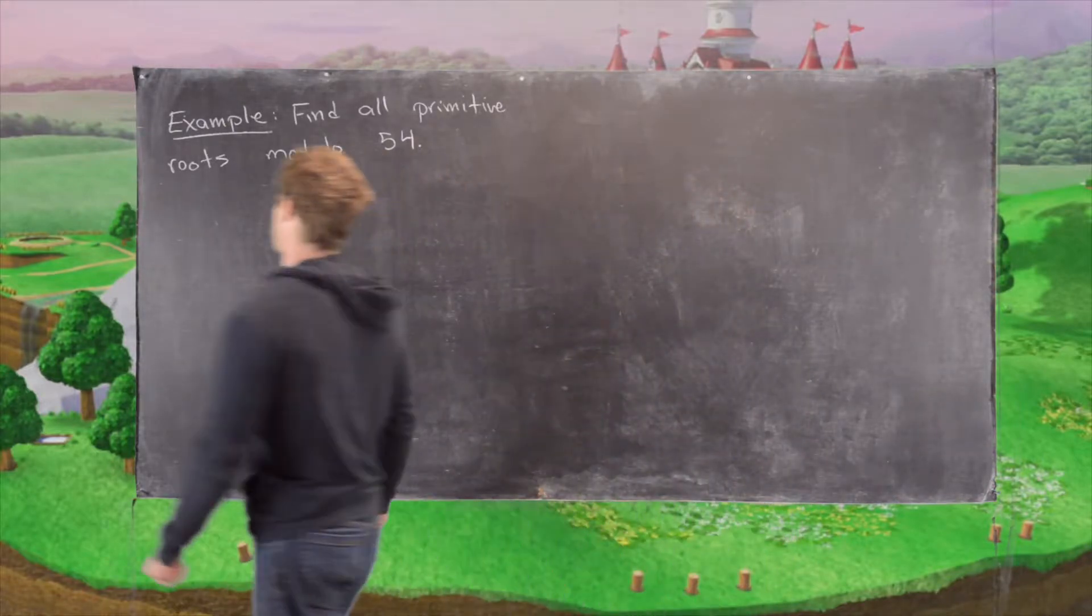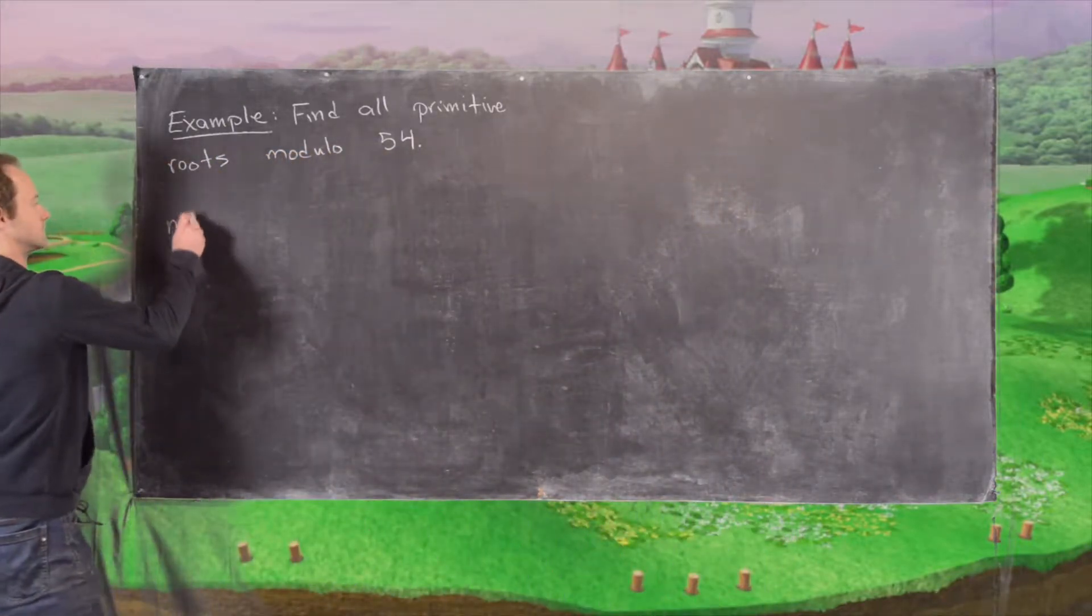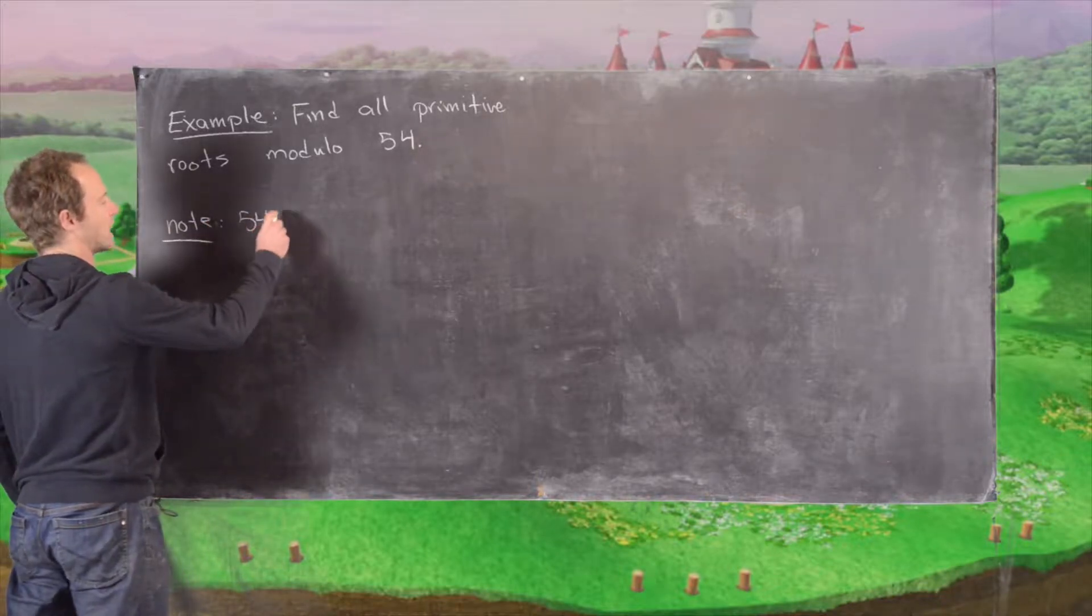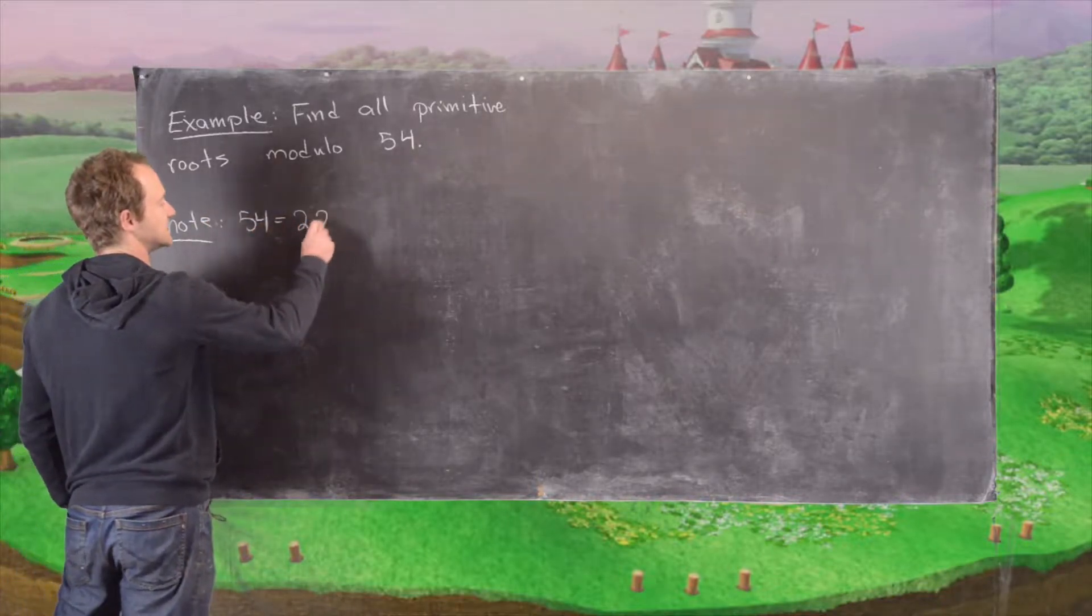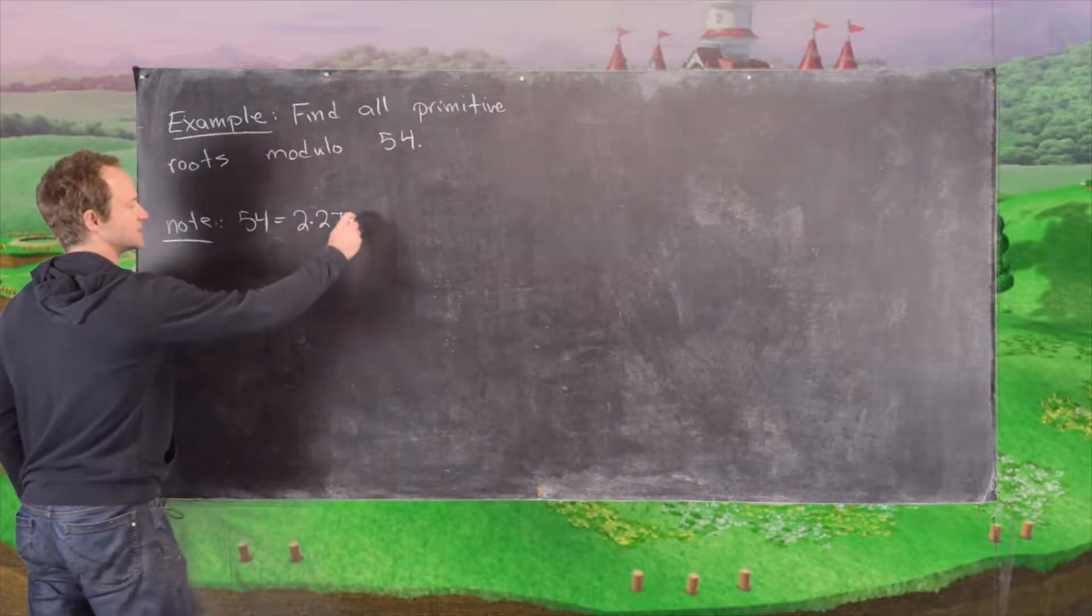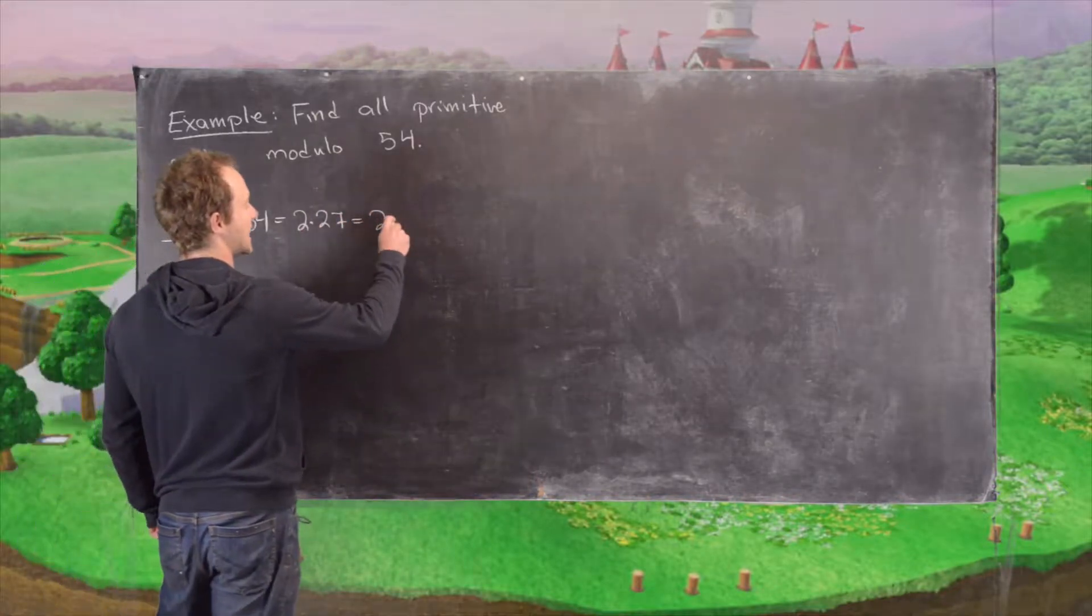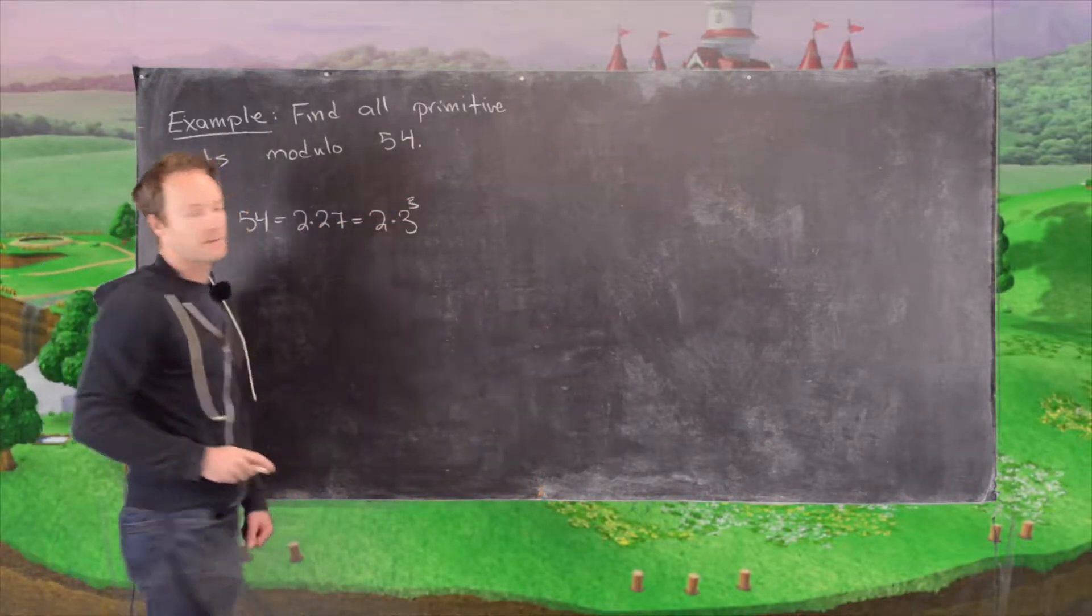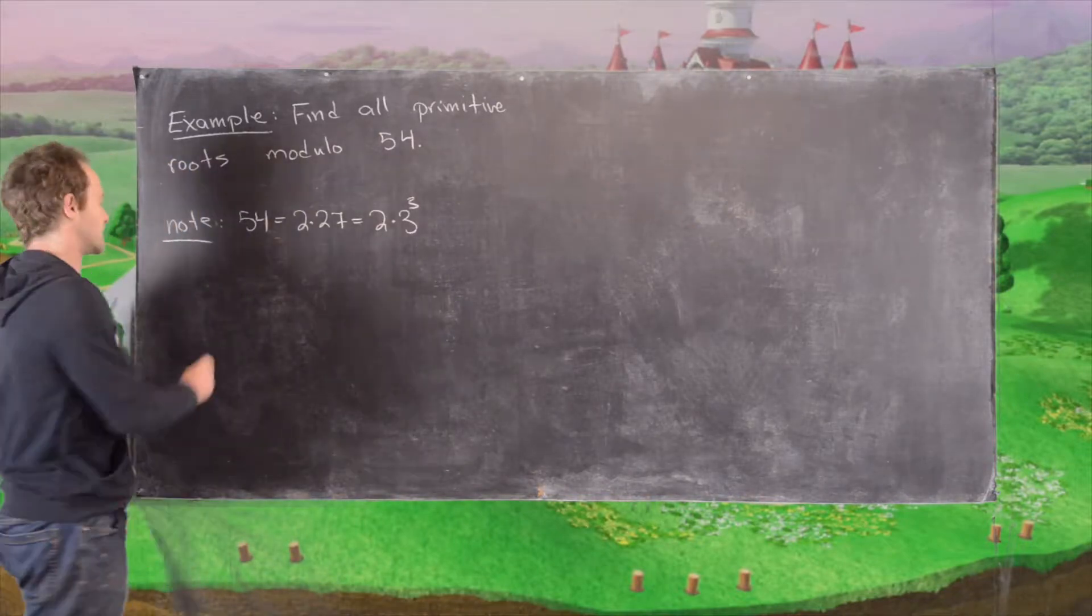Let's first notice the following, that we can factor 54 as follows. This is 2 times 27, which is the same thing as 2 times 3 cubed. So that means we know there is a primitive root.